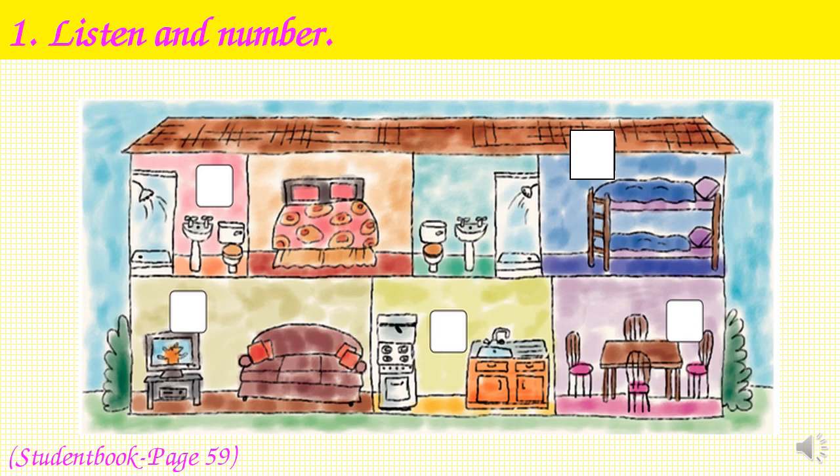I would like to make the first example for you. Now listen. Listen and number one: Look, this is my house. It has an upstairs and a downstairs. Upstairs you can see two bedrooms. Number one: upstairs, bedrooms. Okay, now you listen and do the others. Are you ready? Yes, let's start.